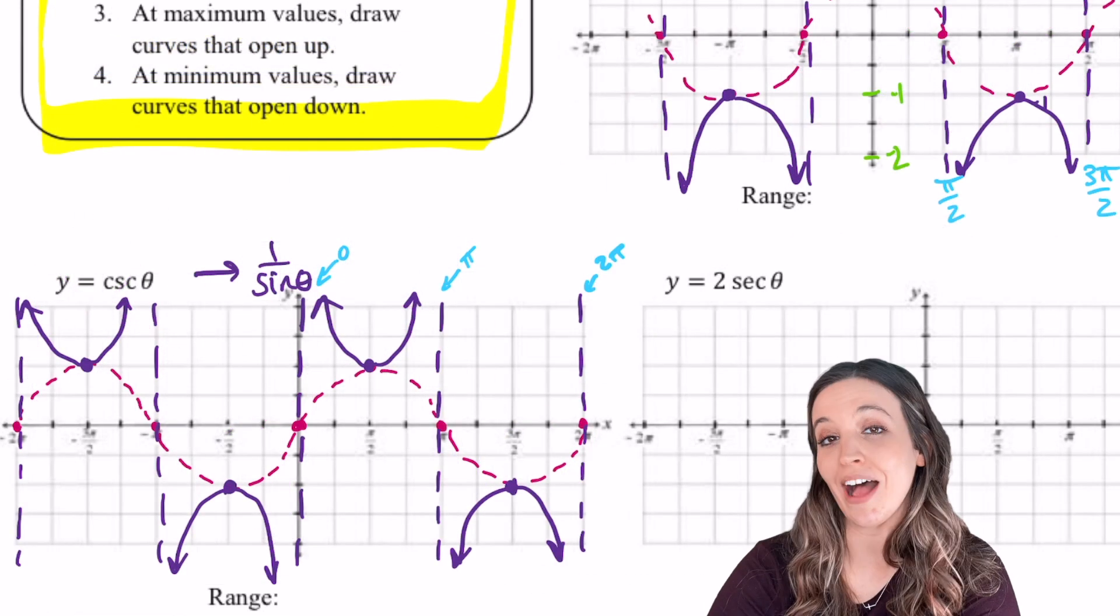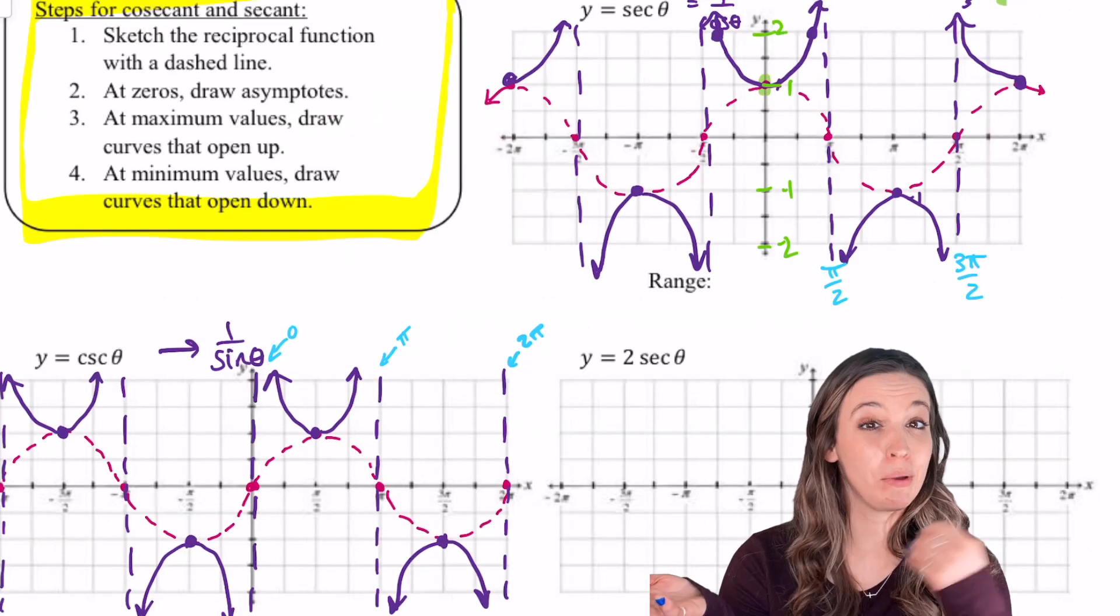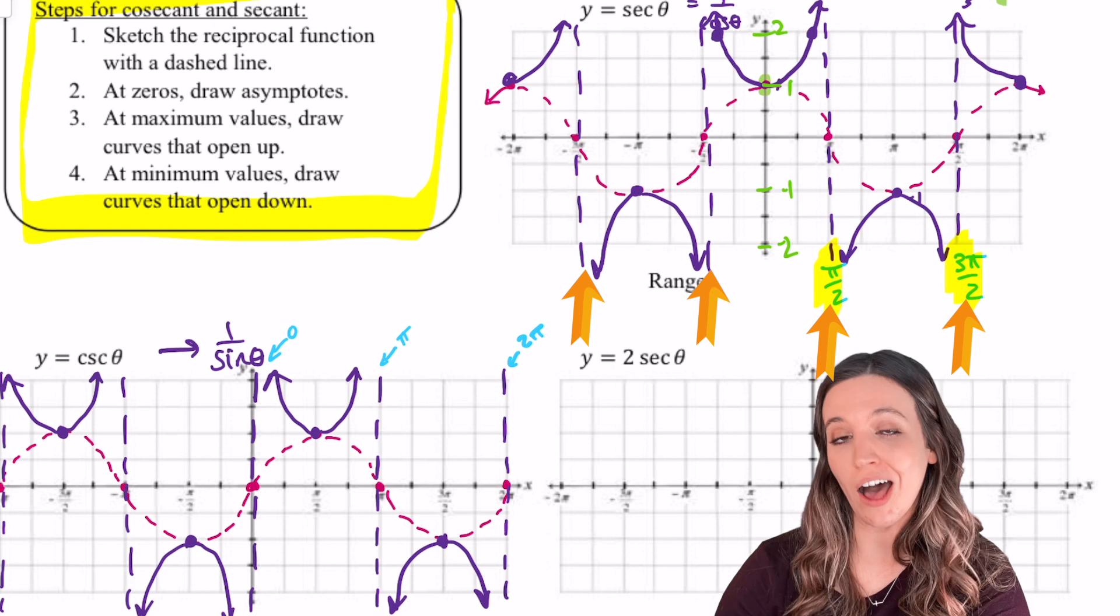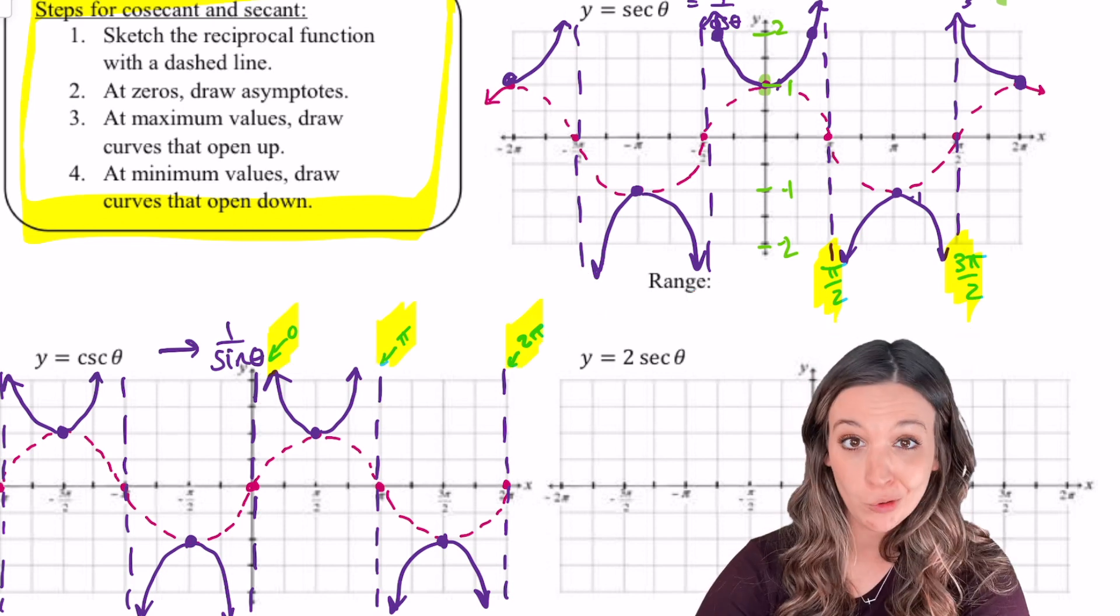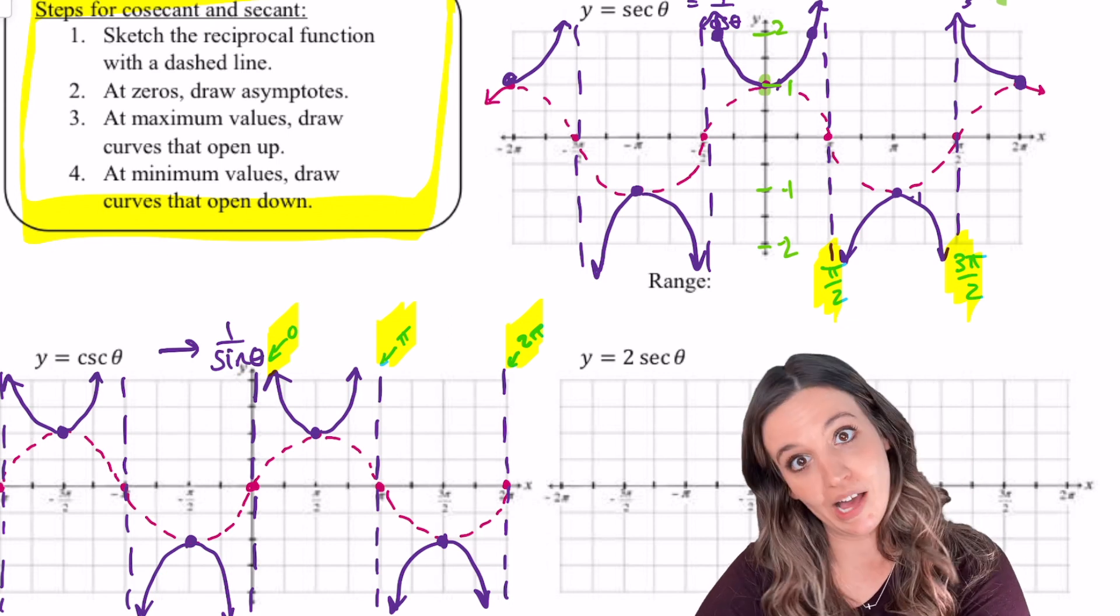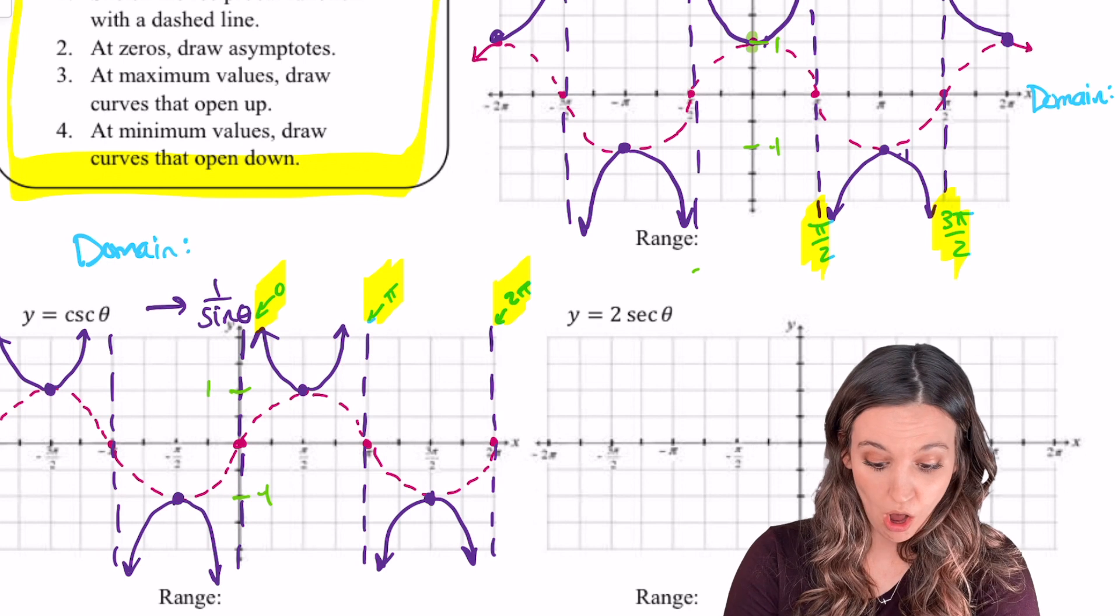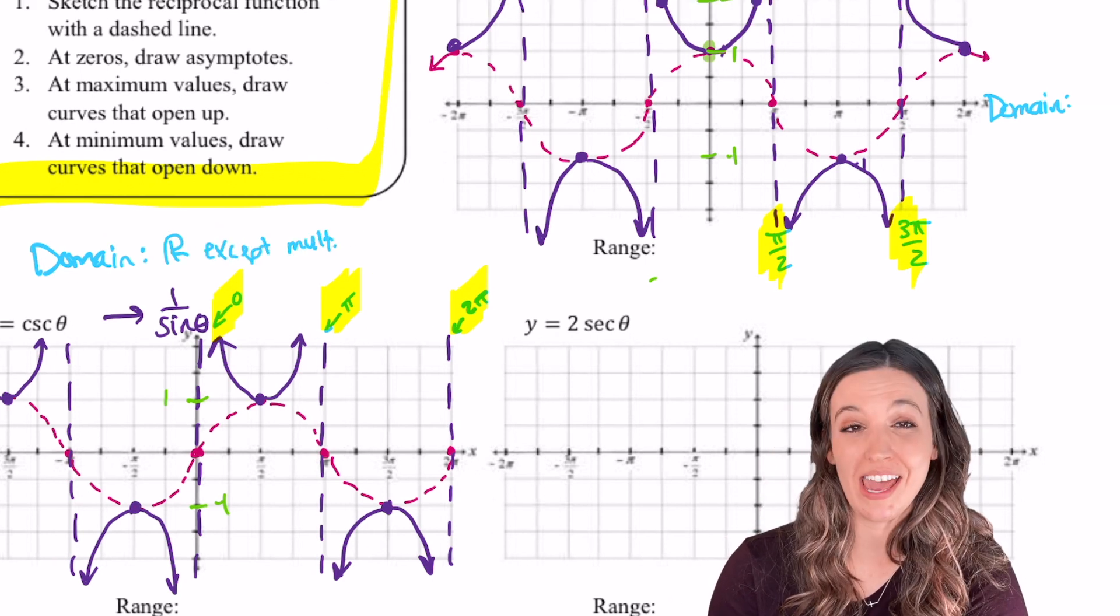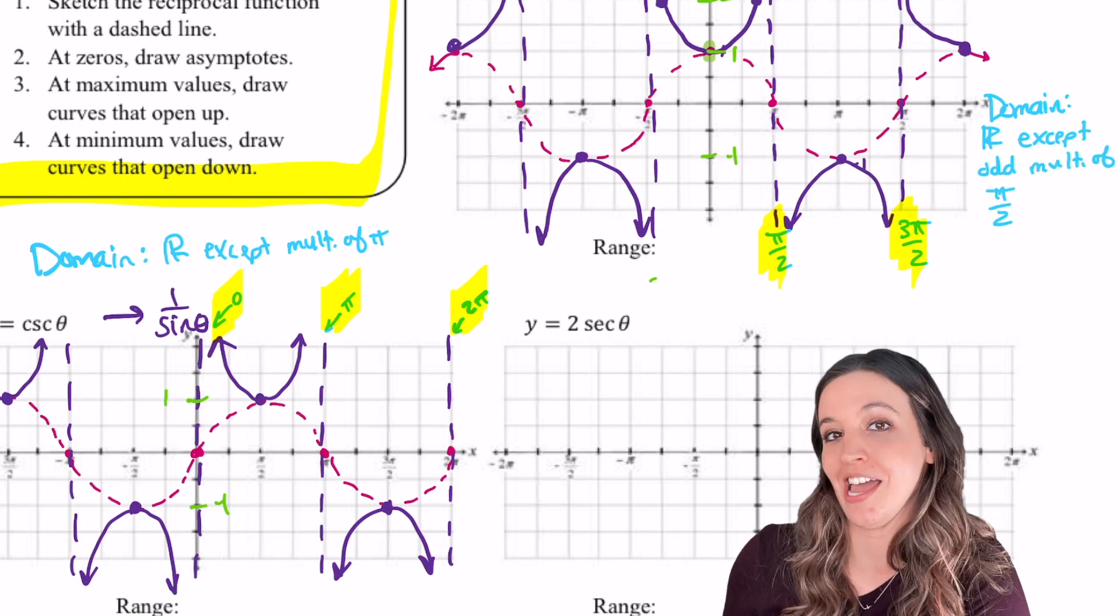Check out the graph of cosecant. What do you notice about the asymptotes of secant compared to cosecant? Well, secant's asymptotes are those odd multiples of π/2 again. And cosecant's asymptotes are multiples of π: 0, π, 2π. Now that we know where the asymptotes are, we actually know the domain. All reals except multiples of π for cosecant and all reals except for odd multiples of π/2 for secant.